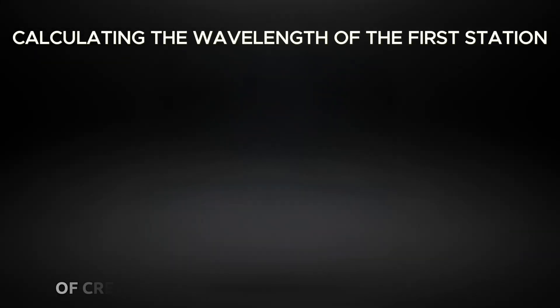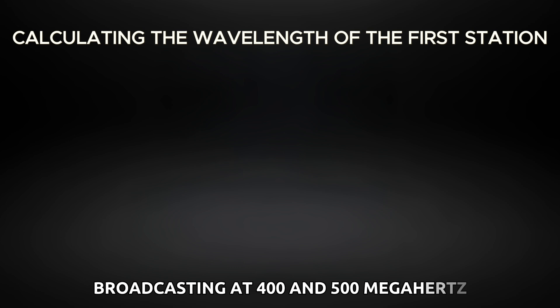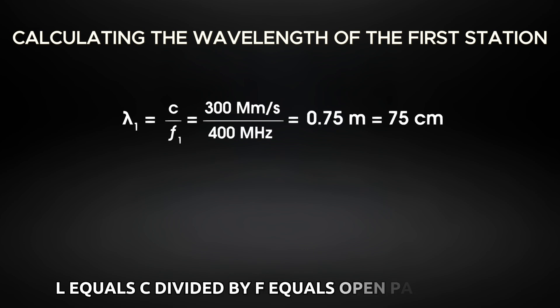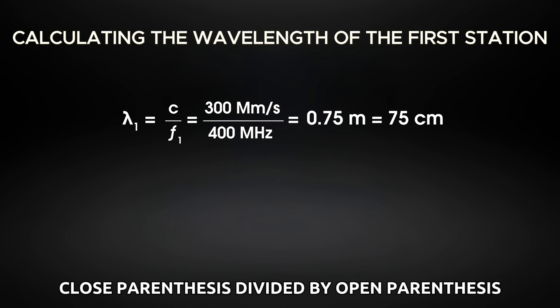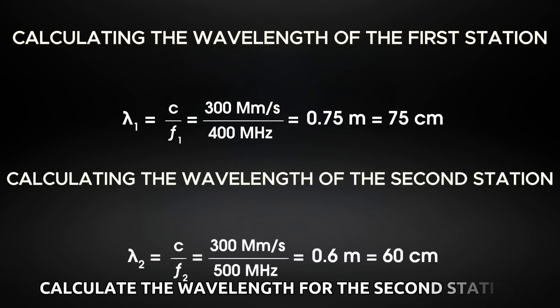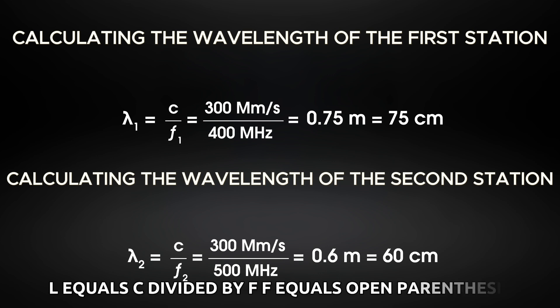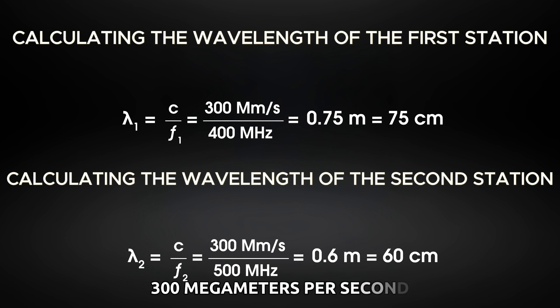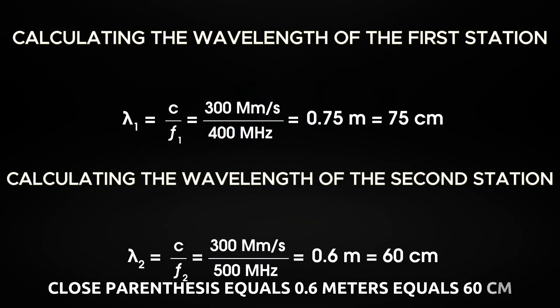Suppose we are solving the same problem of creating an antenna for digital TV stations broadcasting at 400 and 500 megahertz. Calculate the wavelength for the first station: L equals c divided by f equals (300 megameters per second) divided by (400 megahertz) equals 0.75 meters equals 75 centimeters. For the second station: 0.6 meters equals 60 centimeters.